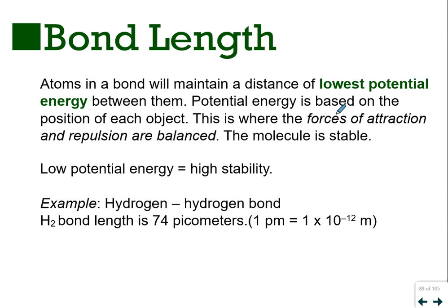We're jumping into bond energy, then we'll be done with this unit. Bond length and bond energy are two important topics. So far, we've talked about why atoms bond—to lower their potential energy and become more stable. Potential energy is based on the position of objects. Where force of attraction and force of repulsion are balanced, a molecule is stable. The lower the potential energy, the more stable the molecule. We'll talk about the hydrogen-hydrogen bond and look at a graph.